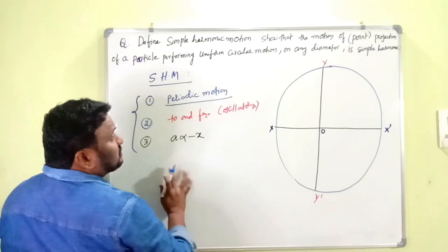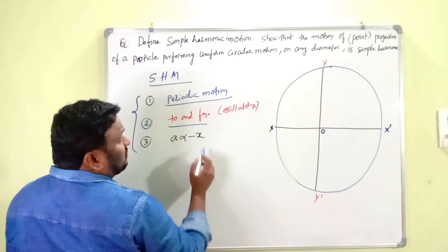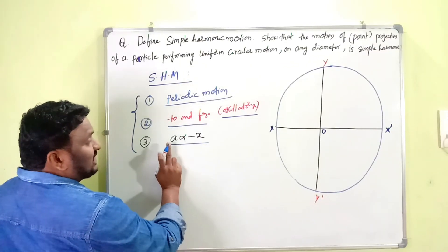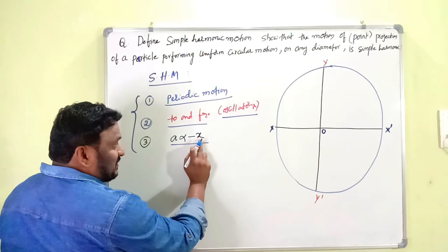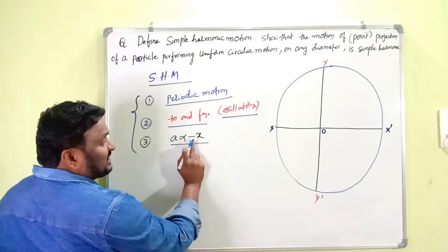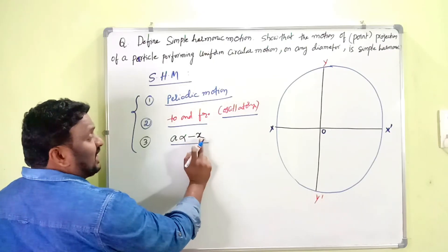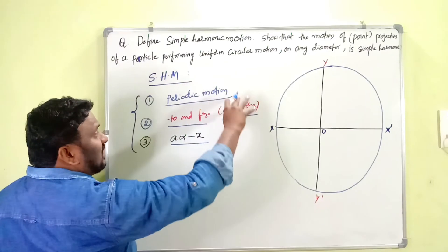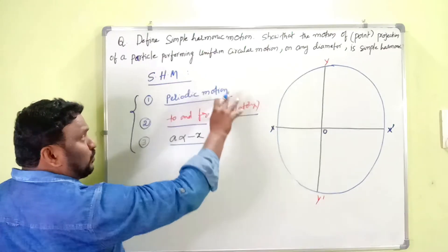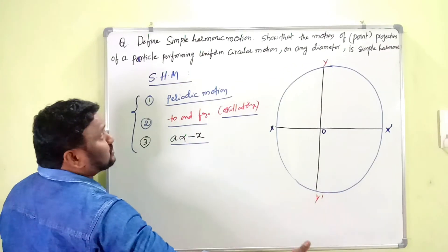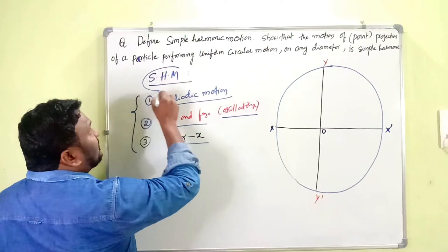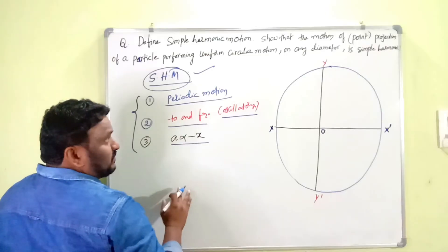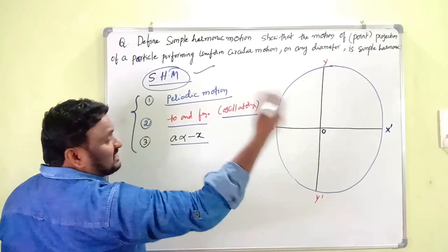So the three conditions are: periodic motion, to-and-fro oscillatory motion, and acceleration directly proportional to displacement with a minus sign indicating they are in opposite directions. If a particle or body exhibits all three properties, it is said to be in Simple Harmonic Motion. Periodic motion means the motion repeats itself over time.